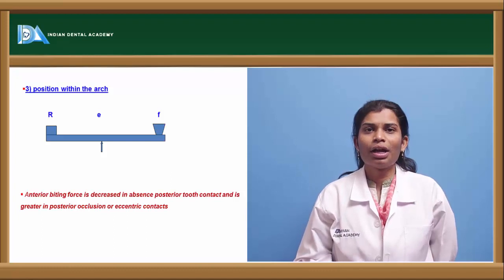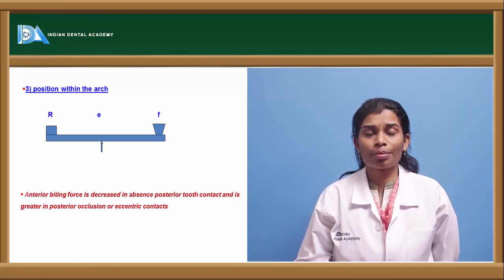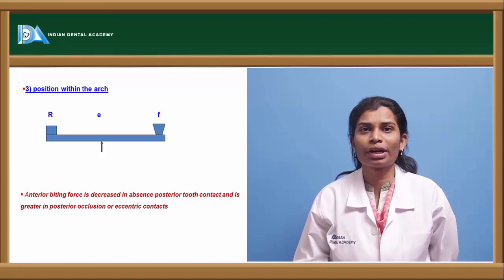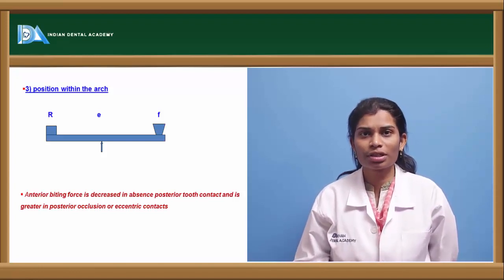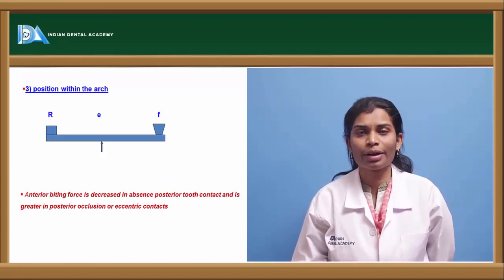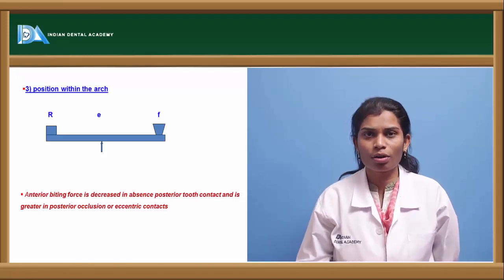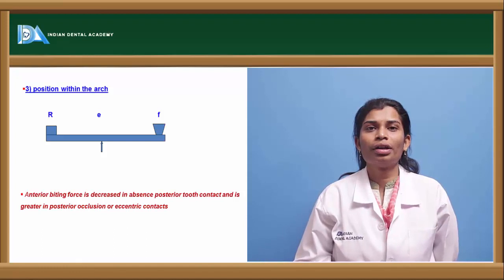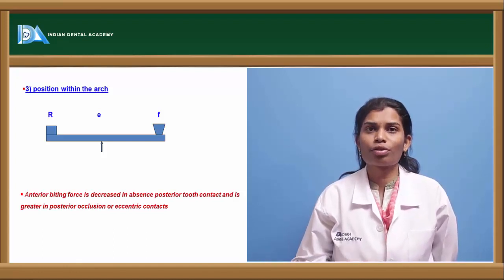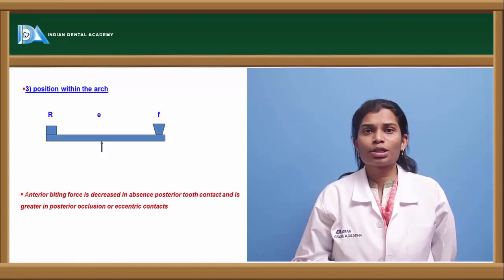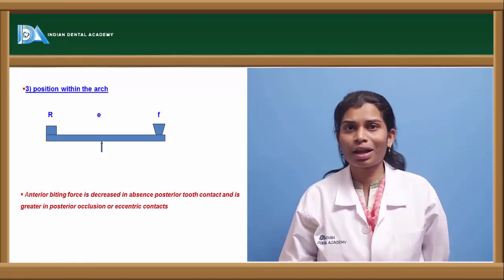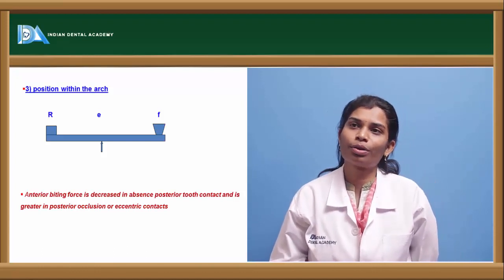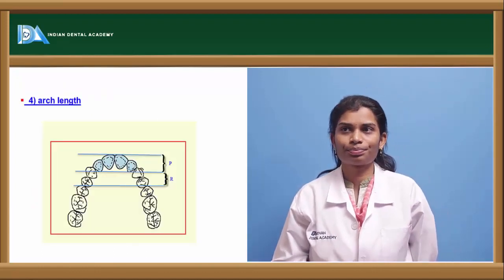The third factor is the position of the abutment within the arch. The dental arch has different shapes, so the abutment location is very important in relation to the hinge or the TMJ. The farther the abutment from the TMJ, the force reduces. Maximum bite force is exerted at the first molar region, and as you move towards the anterior teeth like central incisors and laterals, the force diminishes. Hence, a molar will be the best abutment compared to a central incisor.